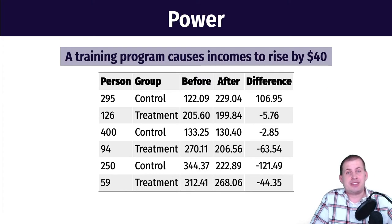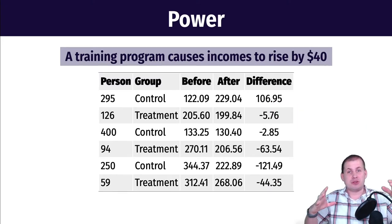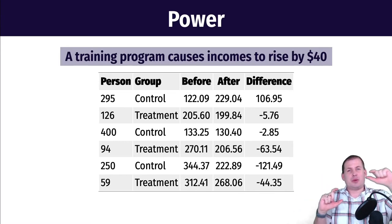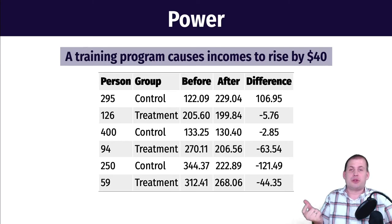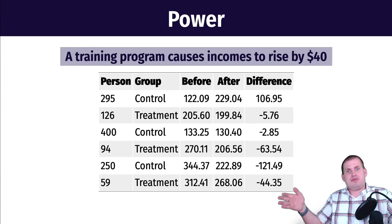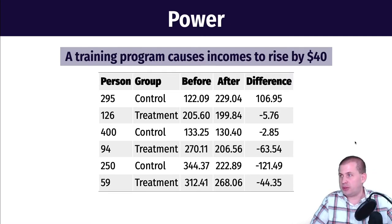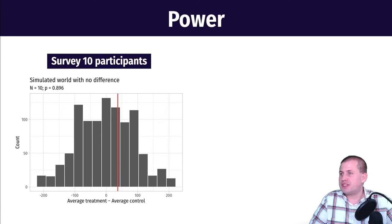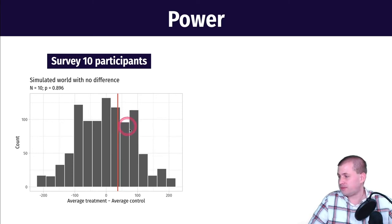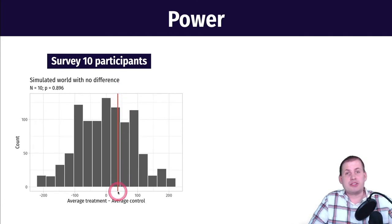We care about significance testing — we want to see if the difference we measure fits in one of those null worlds where there's no actual effect, or if it doesn't fit well in a world where there's no effect. If it doesn't fit well, that means it is significant and it's probably not zero; it's probably some true value. So let's imagine you survey just 10 participants — five in the treatment group, five in the control group. If you do a t-test, a difference-in-means test, the measured difference in averages is about $40. That's what we want; that's the true effect.